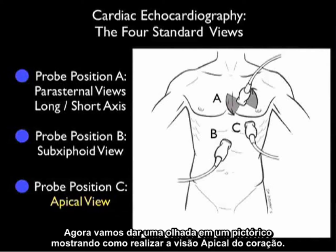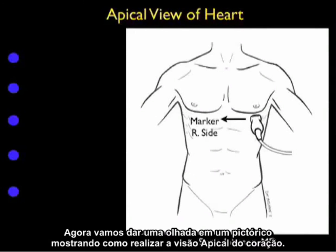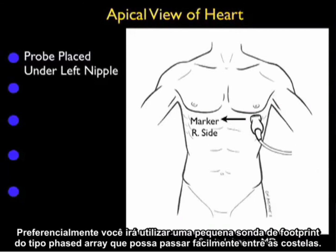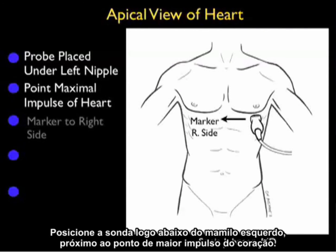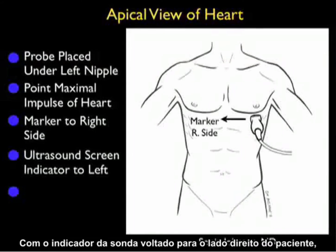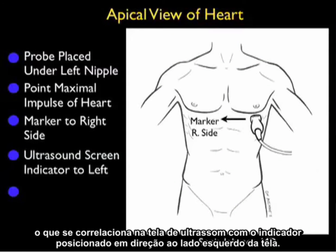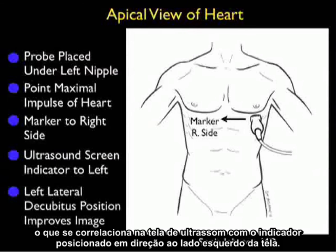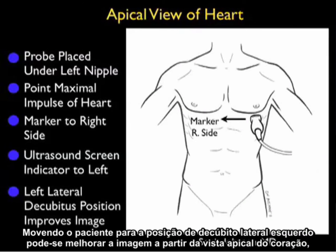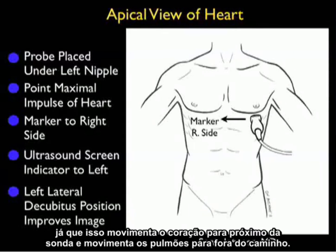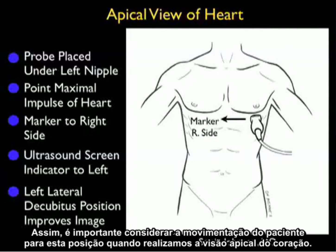Now let's take a look at a pictorial showing how to perform the apical view of the heart. Preferably, you're going to be using a small footprint phased array type probe that can easily get in between the ribs. Position the probe directly underneath the left nipple at about the point of maximal impulse of the heart, with the probe indicator over towards the patient's right side — with the caveat that the ultrasound screen indicator is positioned towards the left of the screen. Moving the patient into the left lateral decubitus position can improve imaging, as it moves the heart closer to the probe and moves the lung out of the way.